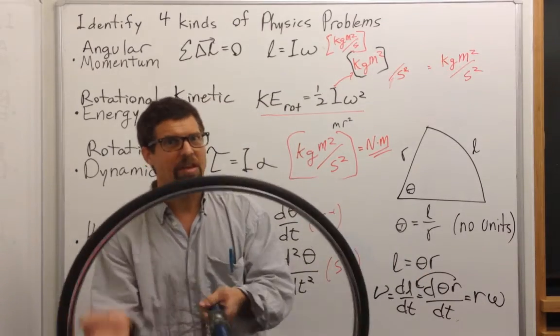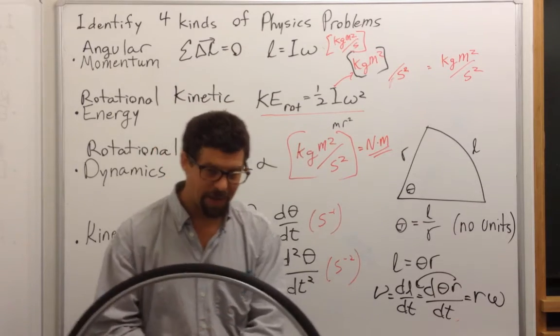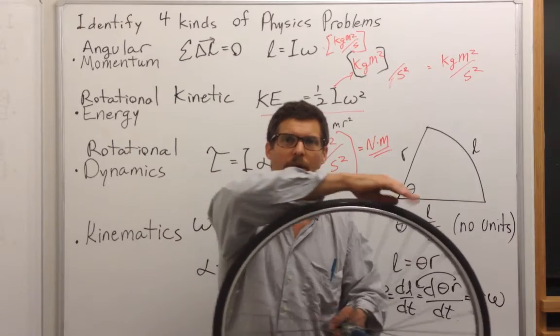And then the question is, if a bicycle wheel is turning at omega and you're on the ground moving along, how fast is the top of the rim moving?